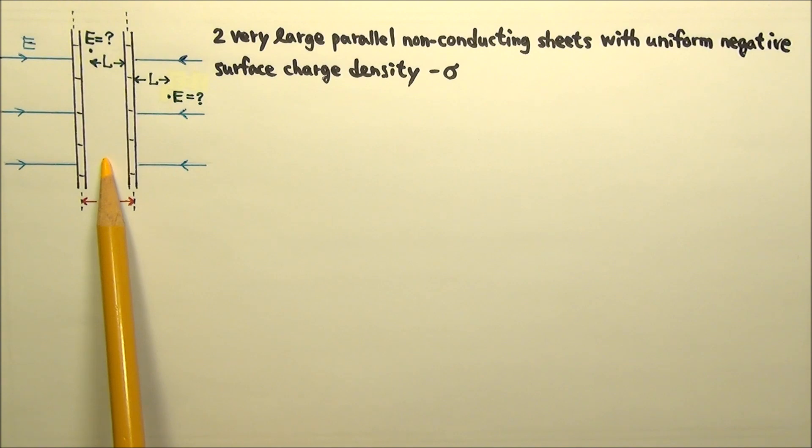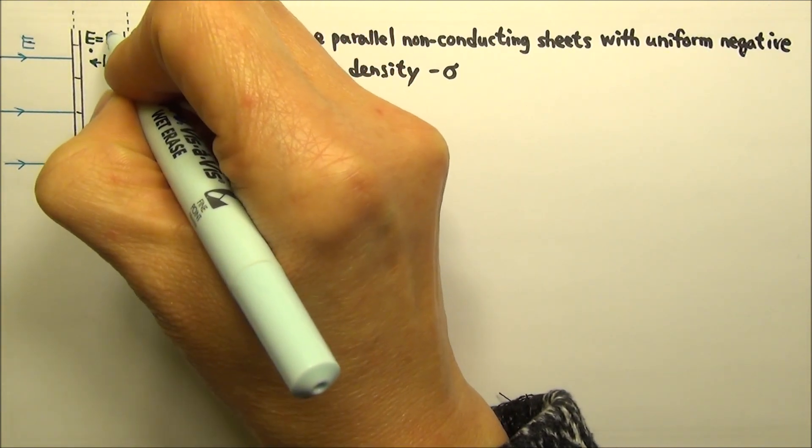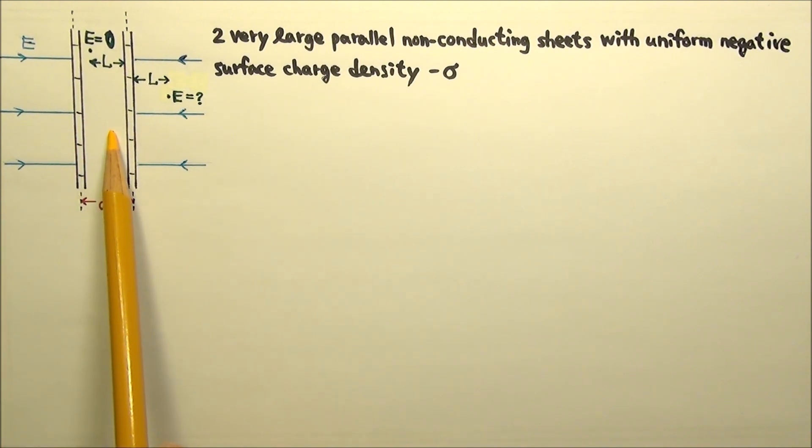What is the field in between? There is none. Because the uniform electric field produced by each of the sheets over here are equal and opposite, so the net electric field in this region is zero.